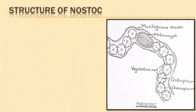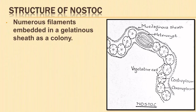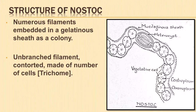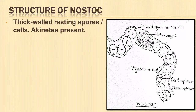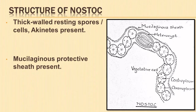Numerous filaments of Nostoc are found embedded in a gelatinous sheath as a colony. The unbranched filament is contorted and consists of a chain of oval, spherical, or cylindrical cells — these are called trichomes. The filament or trichome may contain thick-walled specialized nitrogen-fixing cells called heterocysts, or thick-walled resting cells called akinetes.